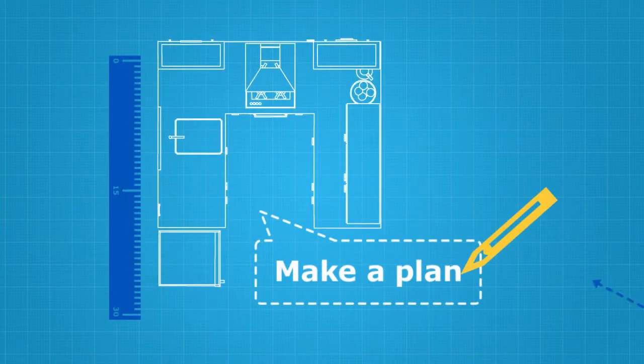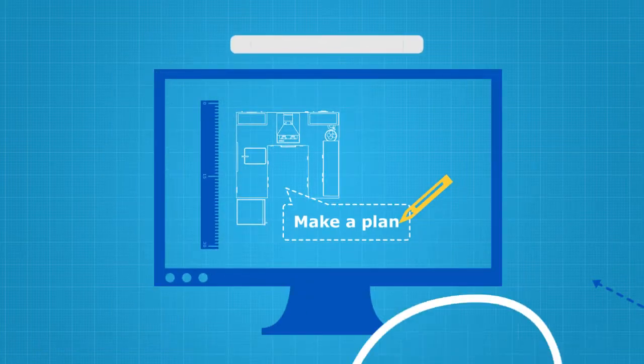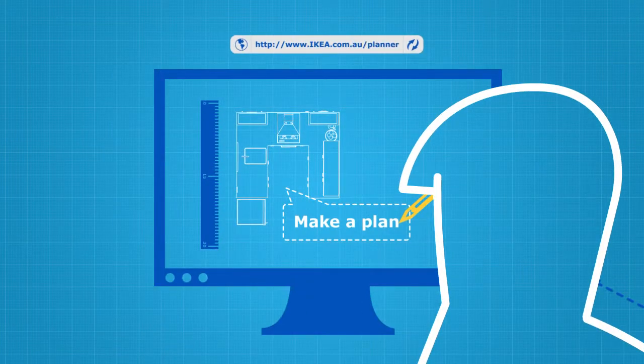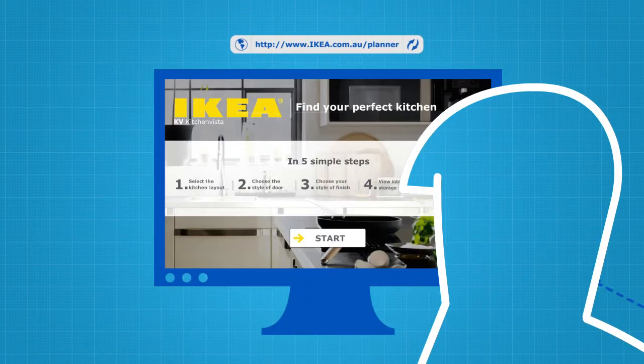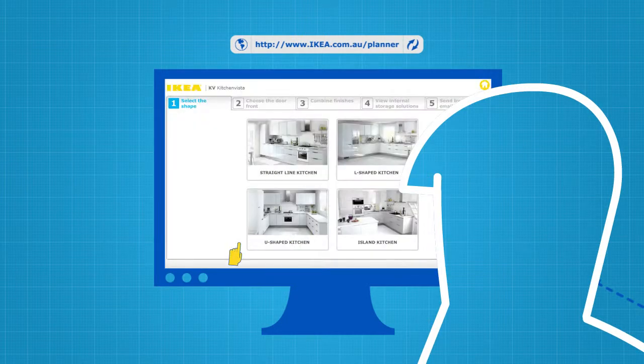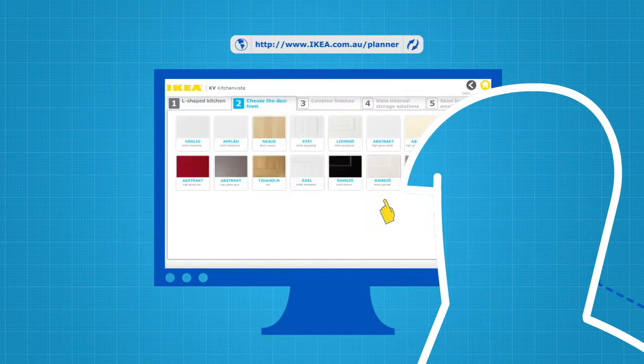Now you've got all those details down, you can make a room plan. Simply open up our online 3D planner and add in your measurements. And if you haven't already, have a play with our kitchen selector tool to see which kitchen suits your style and budget.